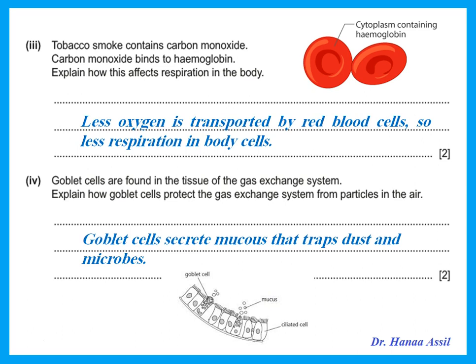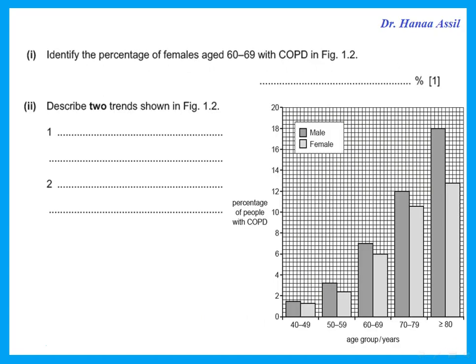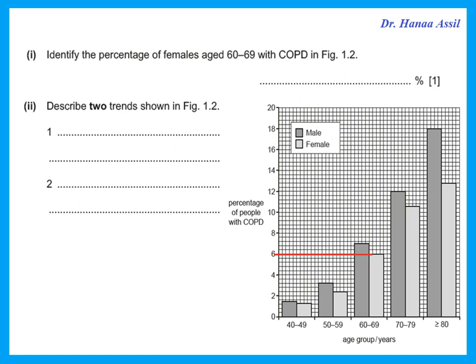So the function of the goblet cells is to secrete mucus that traps dust and microbes. The next question shows some data on chronic obstructive pulmonary disorder (COPD) in people of different age groups, with columns for males and females in different age groups. Identify the percentage of females aged 60 to 69 with COPD. Females are the lighter columns, ages 60 to 69 — this is 6% of the people.